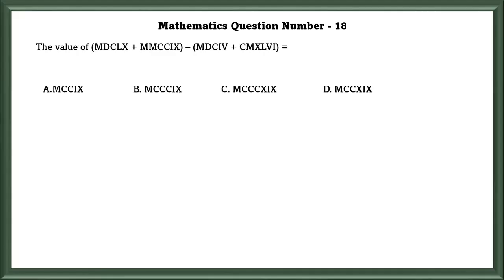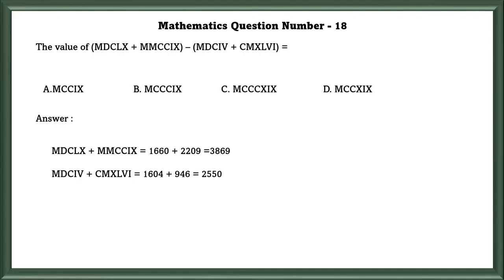Mathematics question number 18. The value of the given numerals. They have asked to find the value of the Roman numerals. The answer to the first part is 3869, and the answer to the second part is 2550.